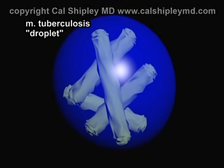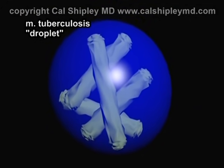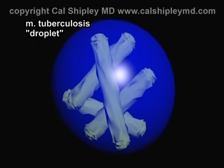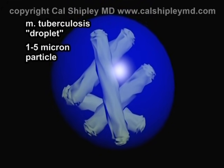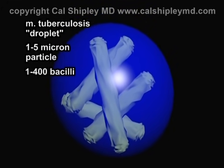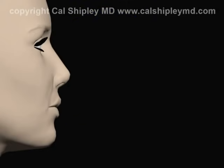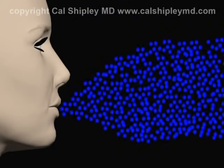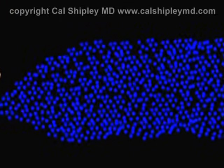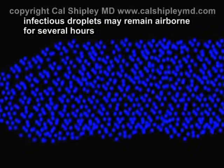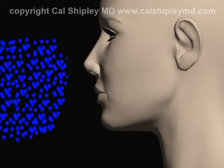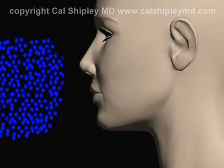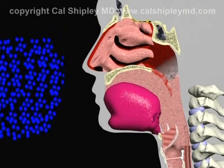As mentioned previously, the transmission of tuberculosis from human to human is only possible via droplet infection. Droplets are particles which are one to five micrometers in size, with each droplet containing one to four hundred bacilli. Droplets are expelled by sneezing, laughing, coughing, singing, or talking, and may remain suspended in air for several hours. They are then inhaled into the airways of another person — this is the only means by which transmission of tuberculosis may occur from human to human.